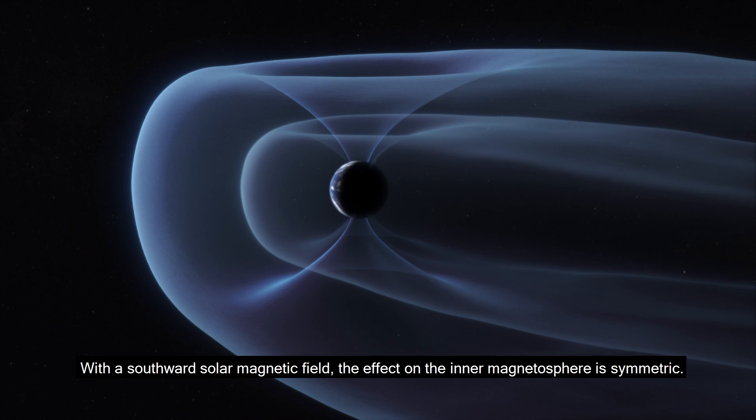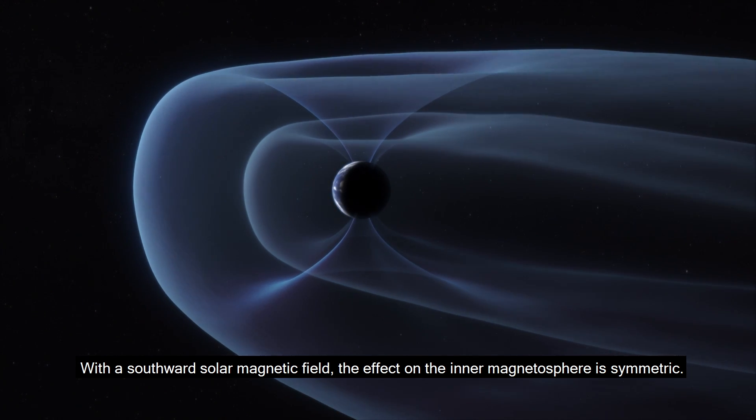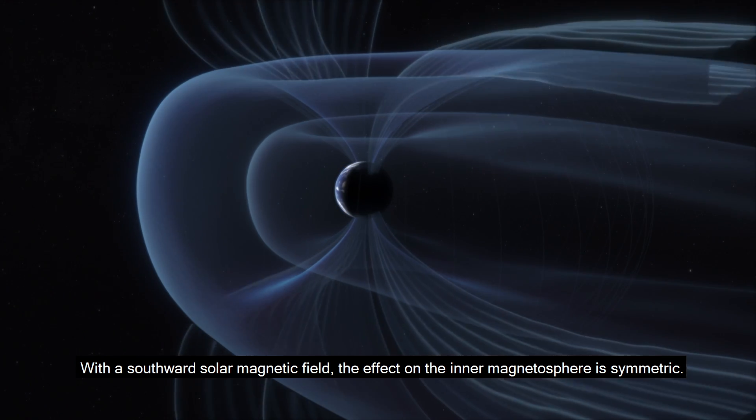With the southward solar magnetic field, the effect on the inner magnetosphere is symmetric.